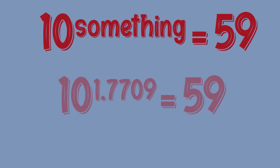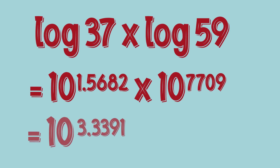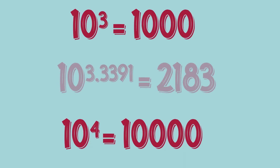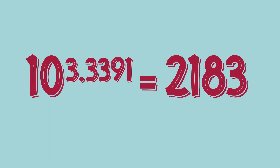If you look up base 10, log base 10 of 59 is 1.7709. You can add the powers: 1.56 plus 1.7709 equals 3.3391. So 10 to the power of 3.3391 is the answer. 10 cubed is 1000, 10 to the power of 4 is 10,000, so 10 to the power of 3.3391 is 2183.